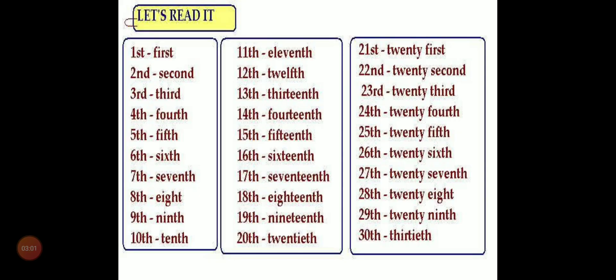In figures, the ordinal numbers are indicated by counting numbers. But we add two letters every time. The first, second and third are shown by adding the letters ST, ND and RD. Almost other numbers are shown by adding the letters TH.